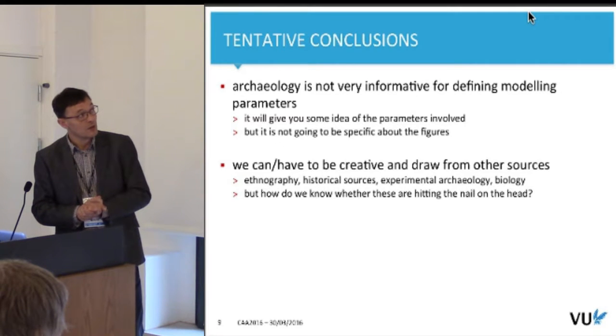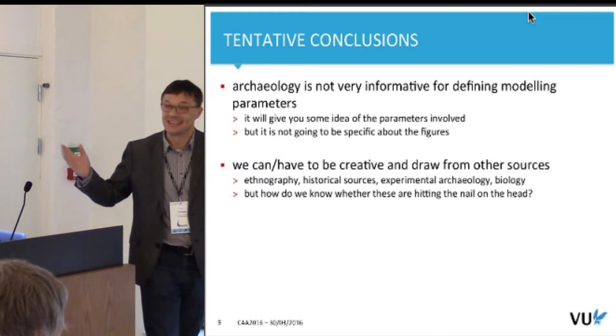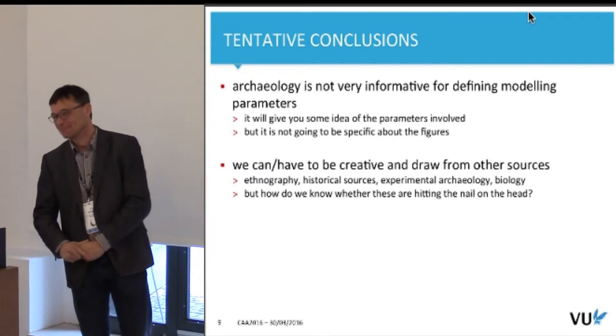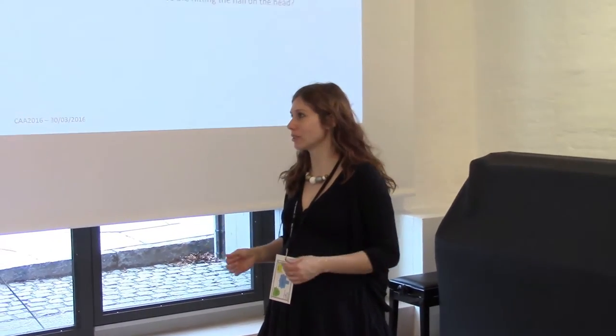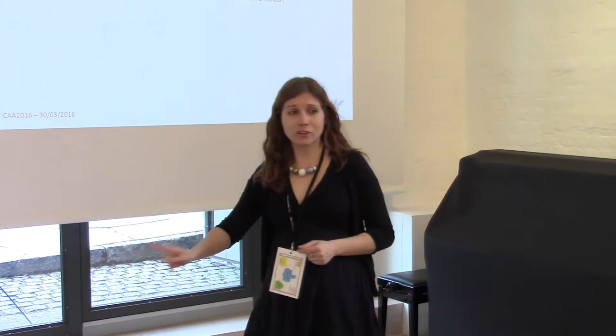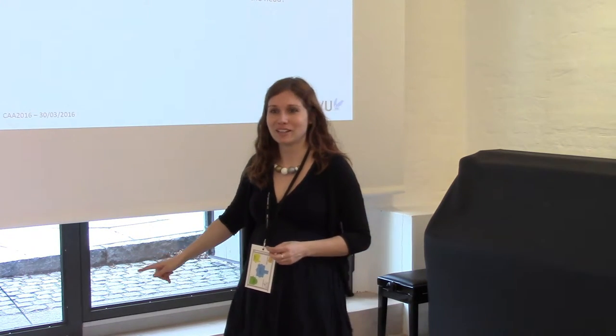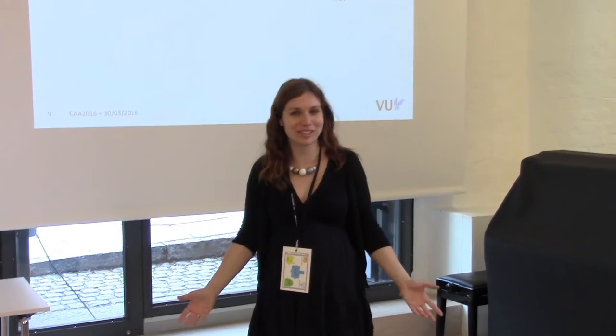The main question is really: how do we know whether these are hitting the nail on the head? I came across this criticism very often when you say you're using parameter values derived from a large sample of hunter-gatherer groups. The first thing that would happen is people would stand up and say you cannot use hunter-gatherer data for non-Homo sapiens or hominins two million years ago. To which you say: well, they didn't do the census. I have no idea what their population growth rate is — they didn't take notes, sadly.